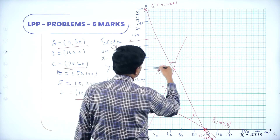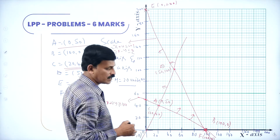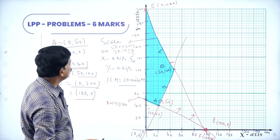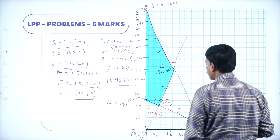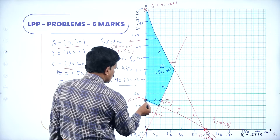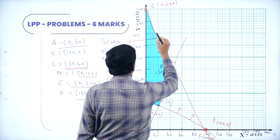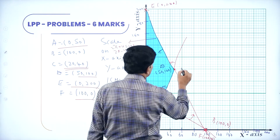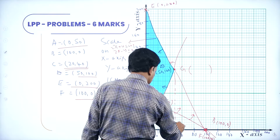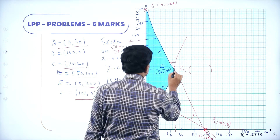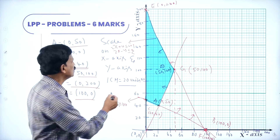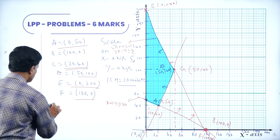The feasible region for the given problem is the region satisfying all three constraints. The corner points of this feasible region are identified. By drawing on a graph sheet, the intersection point G of the two lines gives x = 50 and y = 100, that is the point (50, 100).